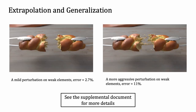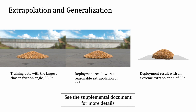We showcase more aggressive extrapolation and generalization experiments. In the bread-tearing example, the problem parameter is the Young's modulus and weak elements are inserted to help with fracture. A mild perturbation on the weak elements yields a decent result with a total position error of 2.7%, but aggressively perturbing the weak elements causes significant errors. For the sand experiment, our approach provides robust results under a reasonable extrapolation to 44 degrees with an error of 1.8%, but under an extreme extrapolation of 55 degrees, our approach suffers from large errors.